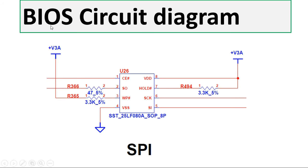So here, as you can see, this is the BIOS circuit diagram. Also, the SPI means BIOS. As you can see here, the BIOS contains eight pins. This is an eight pin BIOS. Of course, there are other types of BIOS.